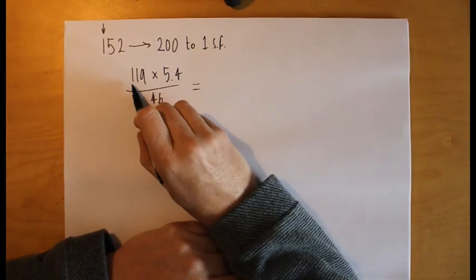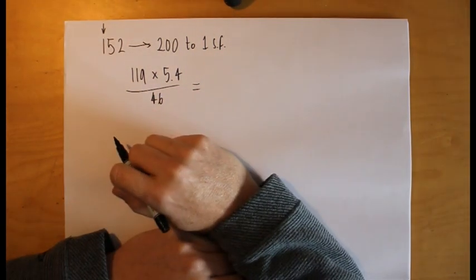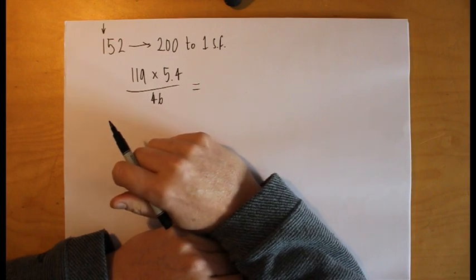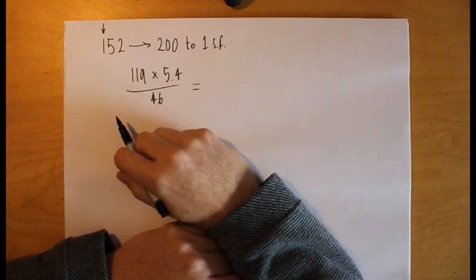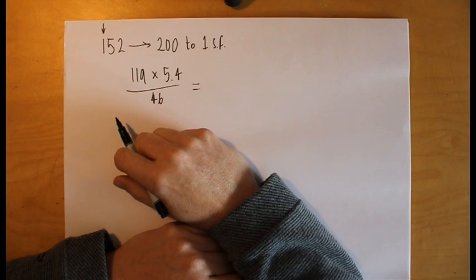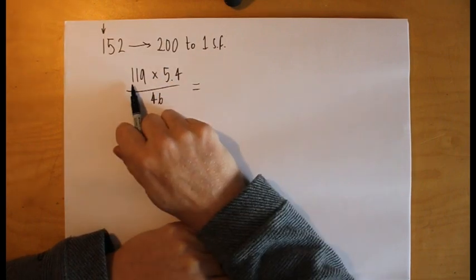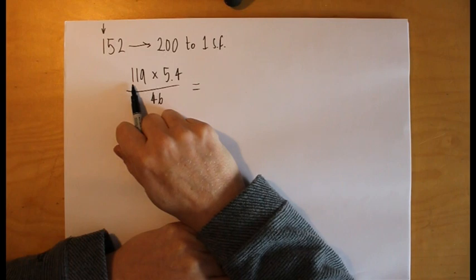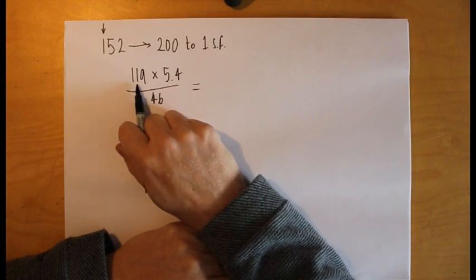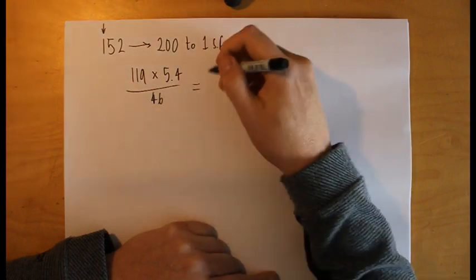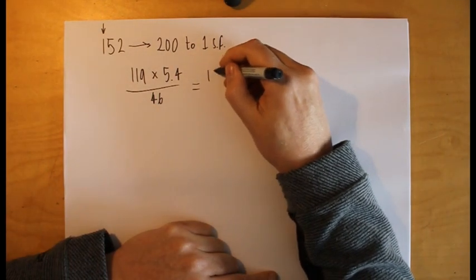In this case, we look at the 119. It would be tempting to look at that and automatically assume that it should be rounded to 120. Of course that would be wrong. Using the method described here, our first significant figure is the one and it's unaffected by the number after it. The number after it is not five or more, it's less than five, and so it does not affect the one and so we end up with 100.